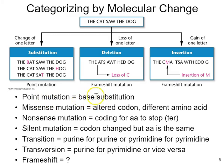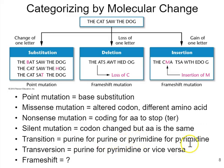Within molecular change, there's more detail to drill into. Point mutations that are base substitutions can be missense mutations, where the codon is altered so a different amino acid results; nonsense mutations, where a coding codon is changed to a stop codon; or silent mutations, where the codon changes but the amino acid stays the same. They can also be transitions — swapping a purine for a purine or a pyrimidine for a pyrimidine — or transversions, a purine for a pyrimidine or vice versa. Frameshifts occur when one or two nucleotides are added or removed, altering the reading frame from that point onwards.